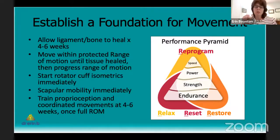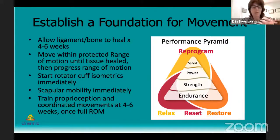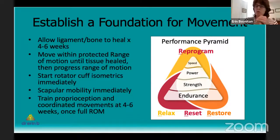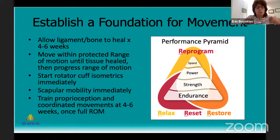We start rotator cuff isometrics right away. Isometric exercises happen when you're not moving your joints — you just have the arm at your side and stimulate the subscapularis muscle, the supraspinatus, the infraspinatus, and the teres minor to get those muscles awake so they can help control stability. By activating these muscles, the swelling associated with the dislocation goes away much faster. The subscapularis is the rotator cuff muscle right at the very front of the shoulder — when the humeral head comes out the front, it stretches that muscle. By isometrically contracting the subscapularis, you help get rid of the swelling and pain goes away faster. You can also do scapular mobility by doing shoulder circles without even moving the glenohumeral joint.